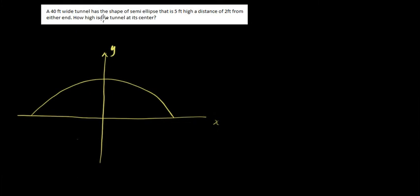So kung 40 feet wide yung tunnel, Sir Jeff, ano itong nasa dula? Gano kalayo ito? Kung 40 feet wide, so tig 20. Very good. So kung tig 20 to, the location of this is at negative 20, zero. And this one is at 20, zero.